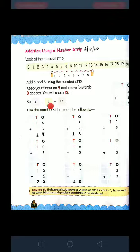Now from 5, move forward 8 times on the number strip: 5 to 6, 1 time; 6 to 7, 2 times; 7 to 8, 3 times; 8 to 9, 4 times; 9...